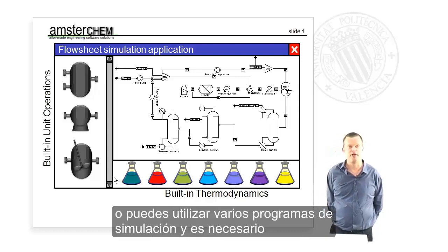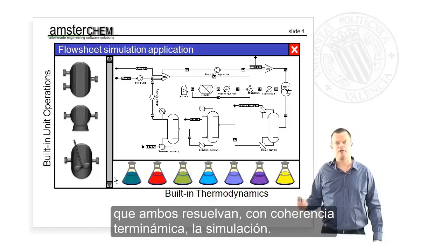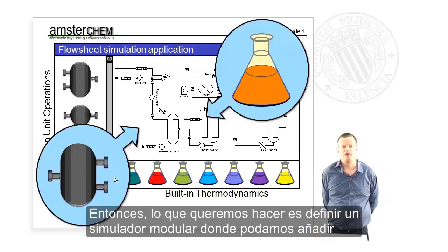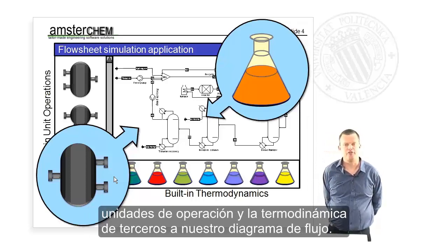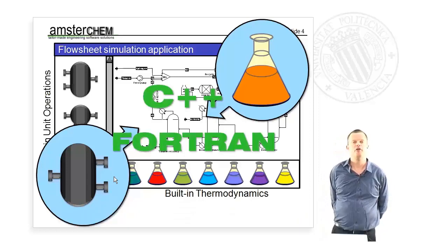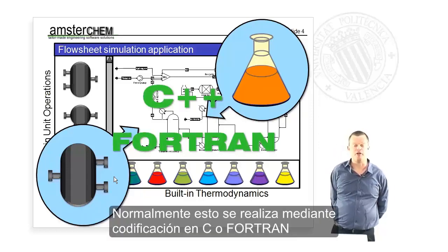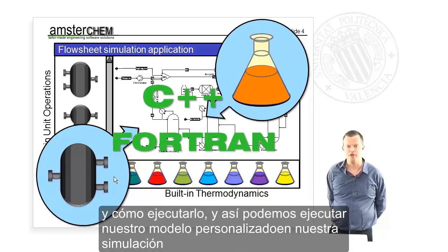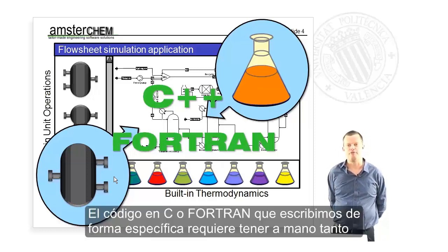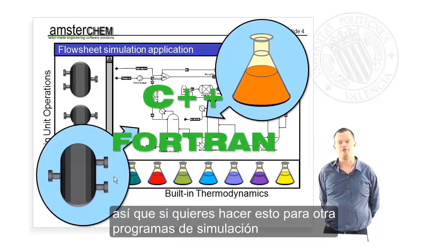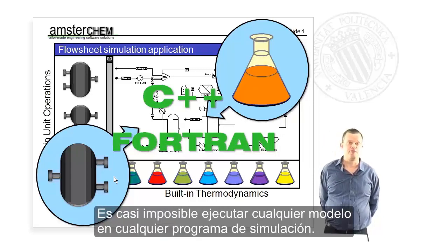You may use multiple simulation applications and it's imperative that they both produce thermodynamically consistent simulation results. What we want is a modular kind of simulation where we can add third-party unit operations and thermodynamics into a flow sheet. This requirement is obvious and is actually supported by all simulation environments — typically by writing C or Fortran code that you tell the simulation application where to find and how to run. However, this is not very flexible: the C or Fortran code is specific to both the model and the simulation application, so if you want to use it in another application, you have to rewrite it.